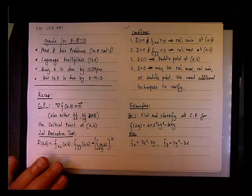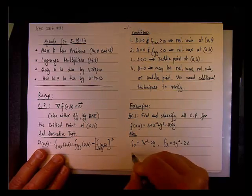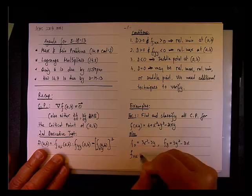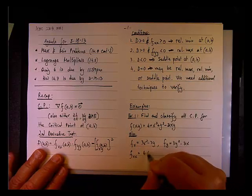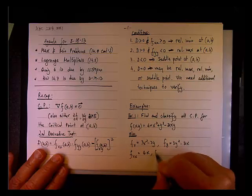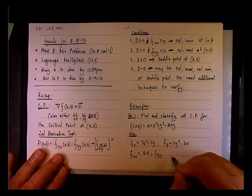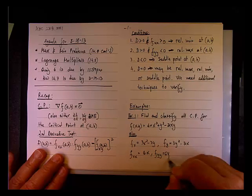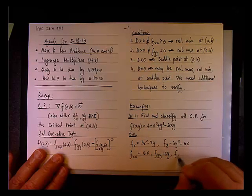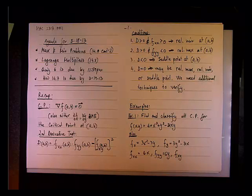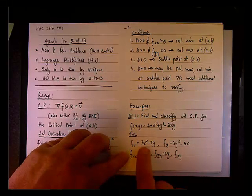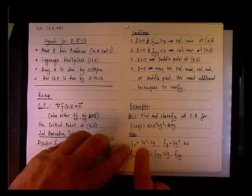But also, in order to do the second derivative test, we might as well go ahead and take the second order partial derivatives. So fₓₓ would be 6x minus 0. fᵧᵧ would be 6y minus 0. And fₓᵧ, if the second order partial derivatives are continuous, then fₓᵧ would be the same as fᵧₓ.